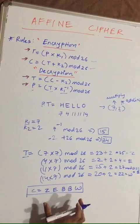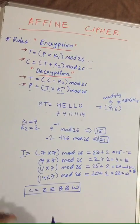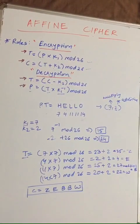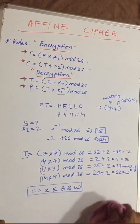Now we have to decrypt this. We'll be using multiplicative inverse. Our ciphertext is ZEBBW.